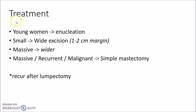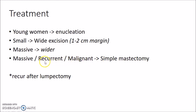The treatment of Phyllodes Tumor depends on the type and size. For a young woman with a benign Phyllodes Tumor, you can try enucleation. However, the treatment of choice for a small benign Phyllodes Tumor is wide excision with a 1 to 2 cm margin. For a massive Phyllodes Tumor, wider excision or simple mastectomy can be done. Simple mastectomy is also done for recurrent or malignant Phyllodes Tumor. Lumpectomy should never be done because Phyllodes Tumor recurs after lumpectomy.